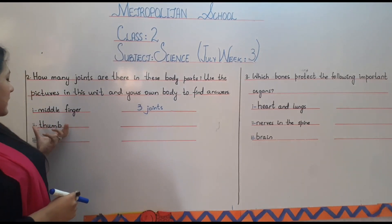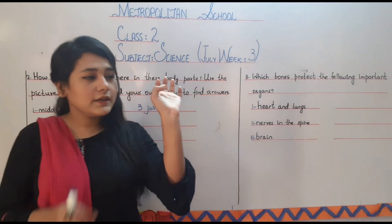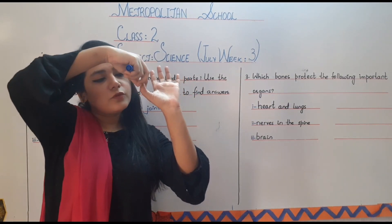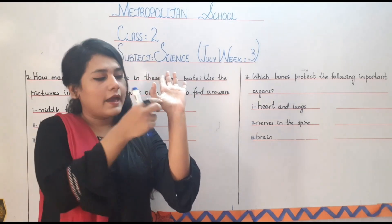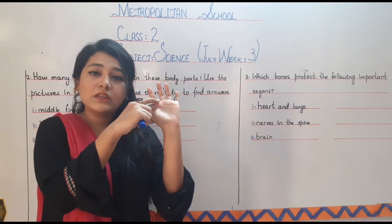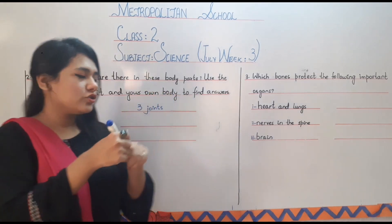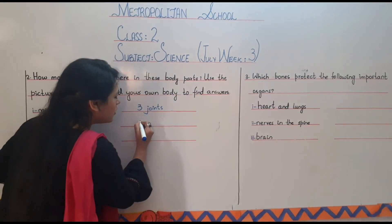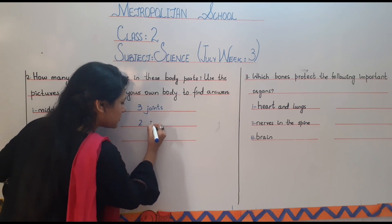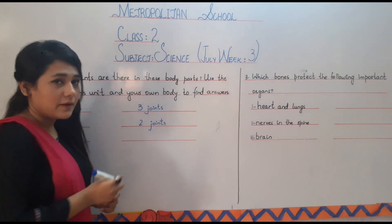After that let's talk about our thumb. How many joints are there in our thumb? The thumb moves firstly from here and from here. So in our thumb we have two joints — one and two. There are two joints in our thumb.